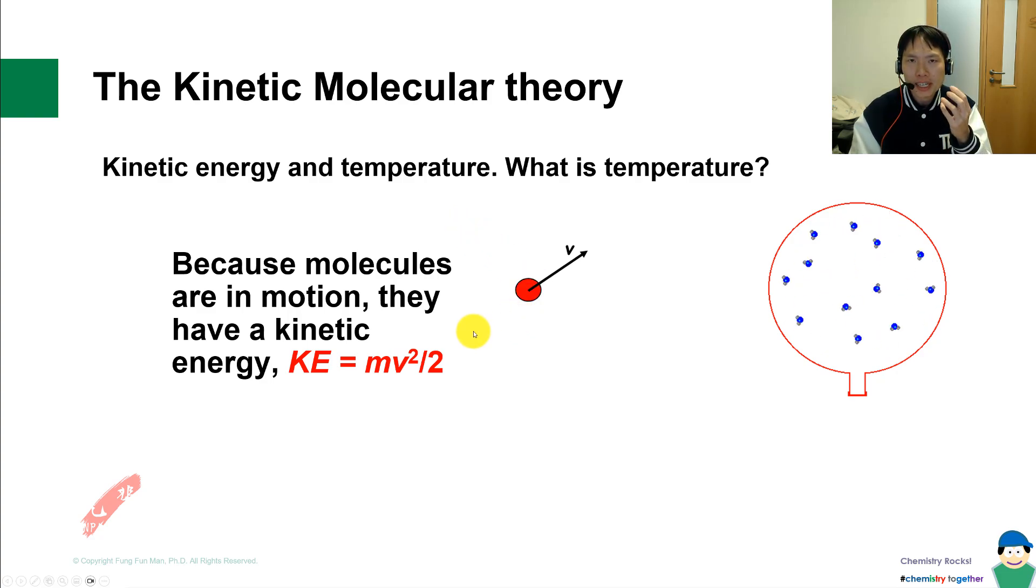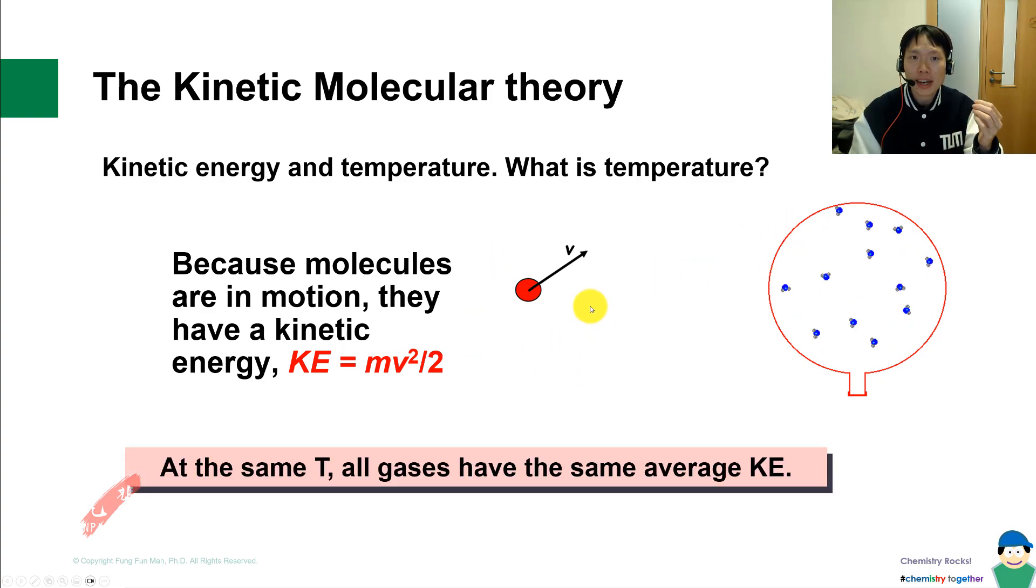Kinetic energy based on physics is KE equals half mv squared. Almost everything in motion has kinetic energy because we have mass and velocity, which give rise to kinetic energy. The key point to take away is that when you have a fixed temperature, all gases have the same average KE. Keywords are same temperature, independent of which gas, your mass, or identity.